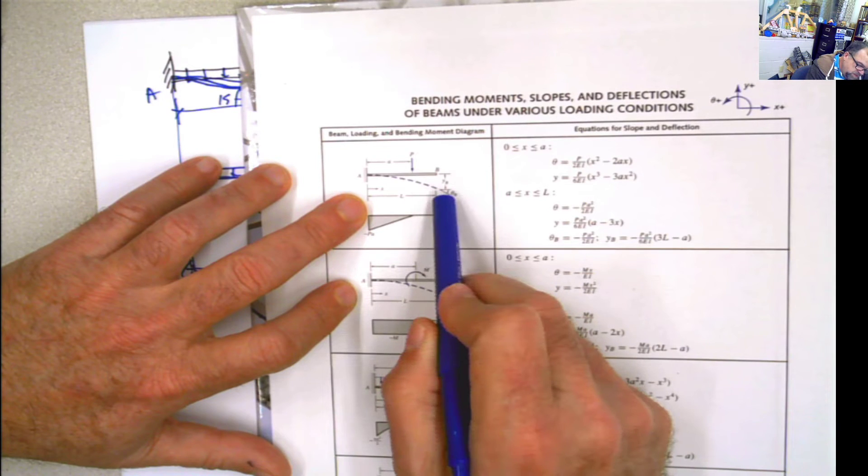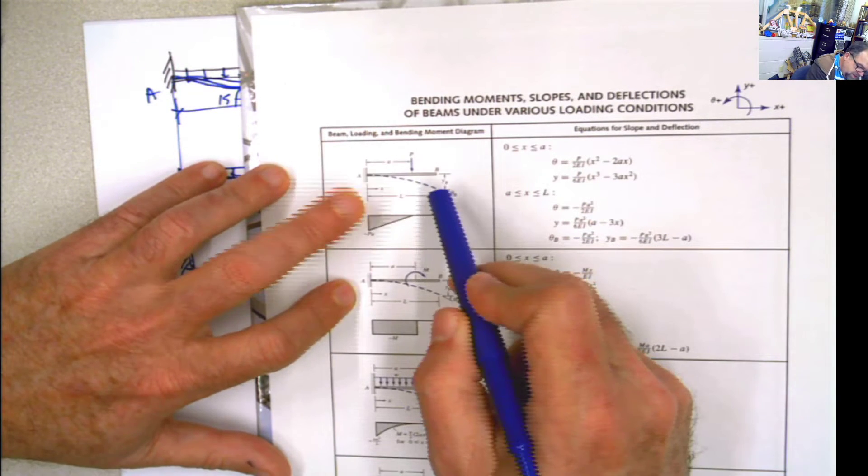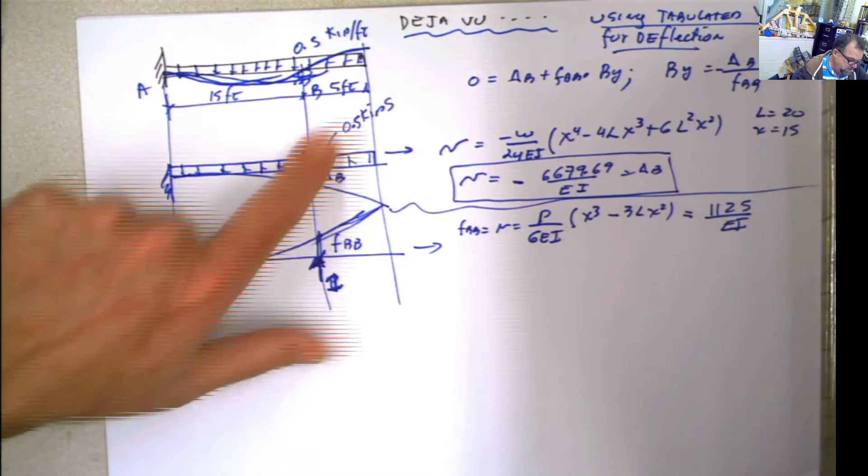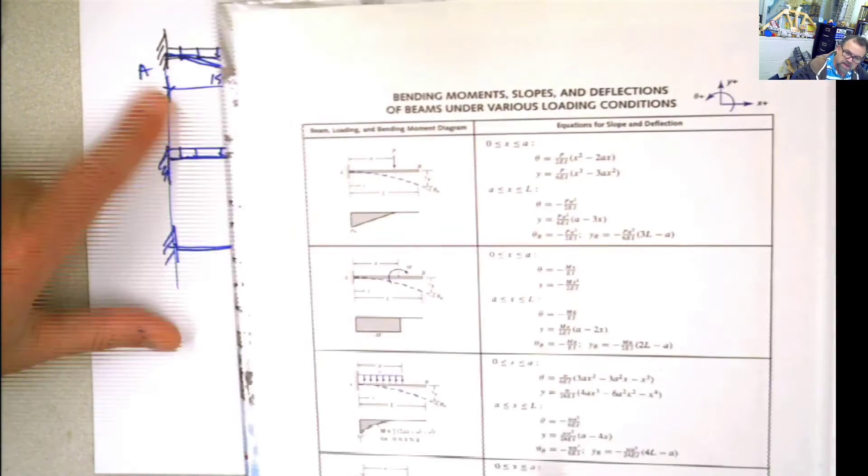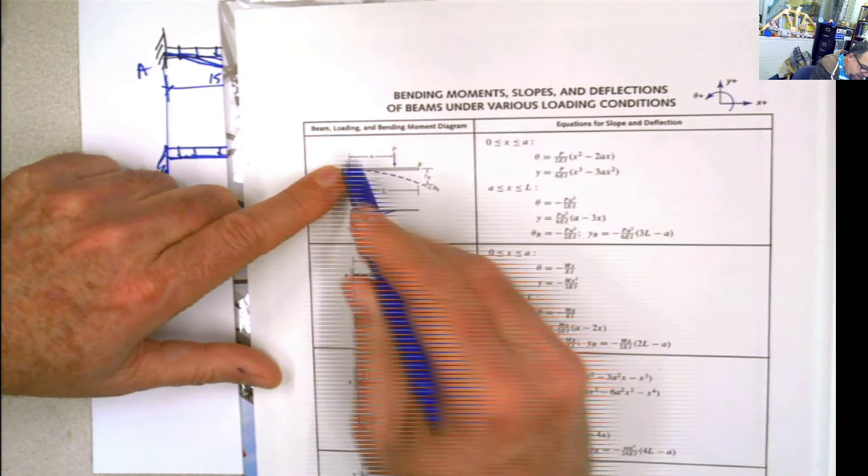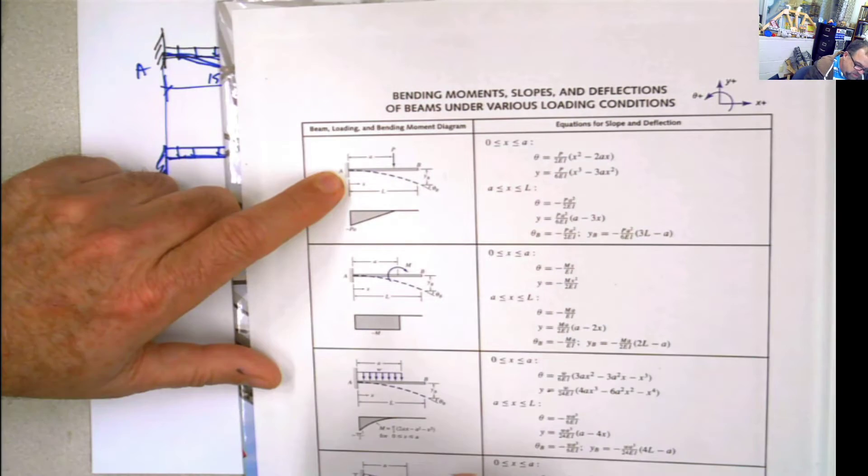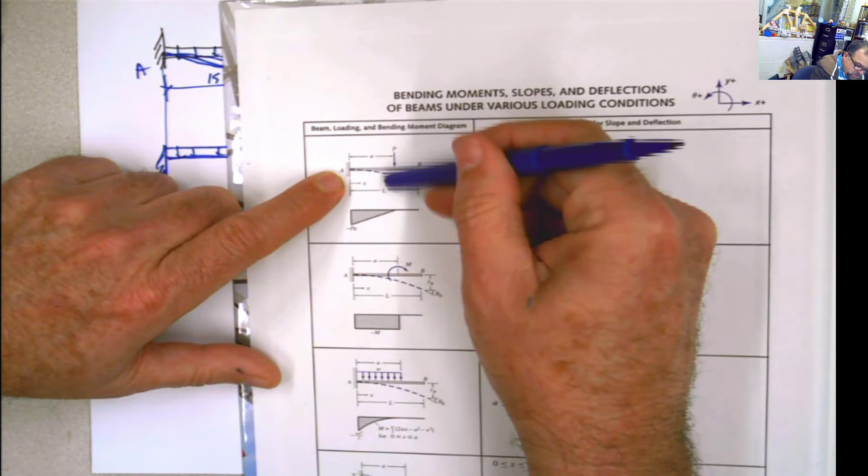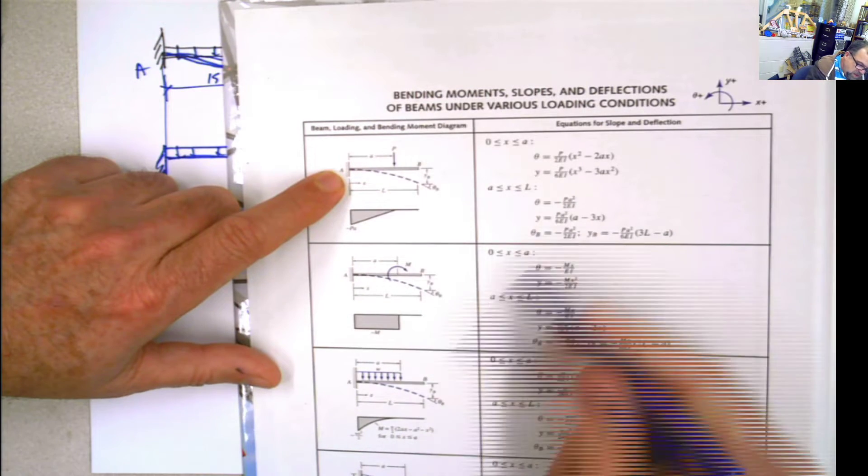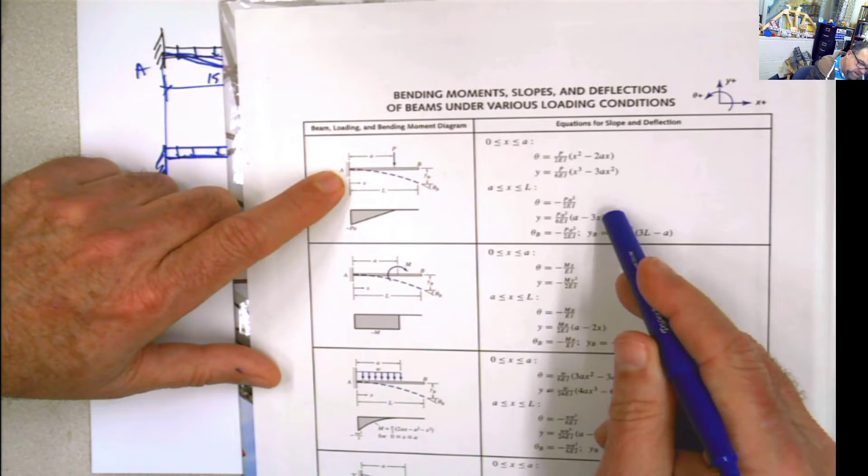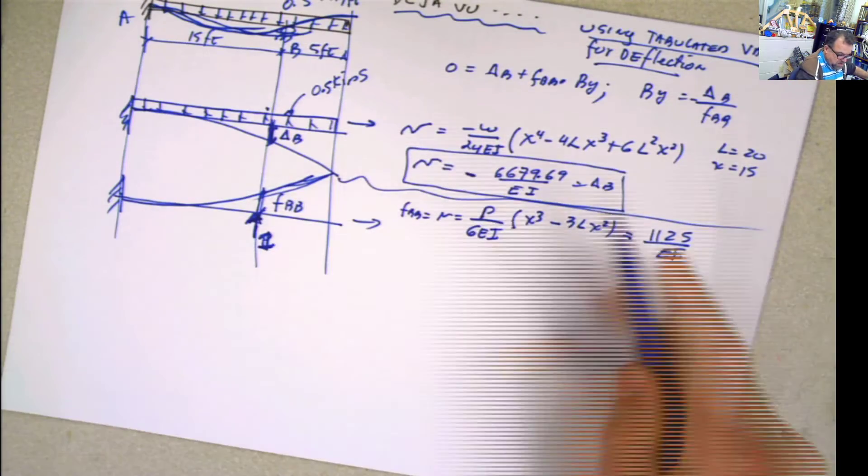If we use this table, this chart, this distance will be 20. 20 here, 20, that distance. a will be 15, but x will be also 15, because I want to calculate the deflection on top of that. And you can use either this one or this one. It's the same thing. So if you do it like that, you're going to get the same exact result as this one.